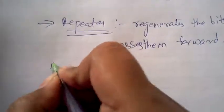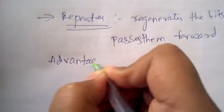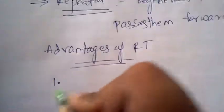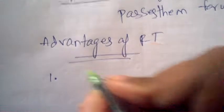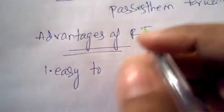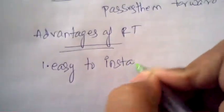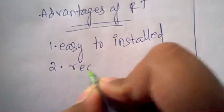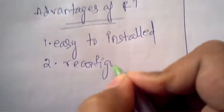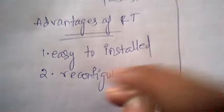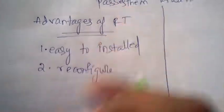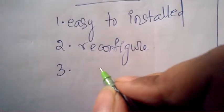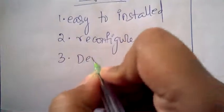Now let us go through the advantages and disadvantages of ring topology. The first advantage is that it is very easy to install. The second advantage is easy to reconfigure — if you want to configure the topology, it is very easy. The third advantage is that each device is linked only to its neighboring devices.